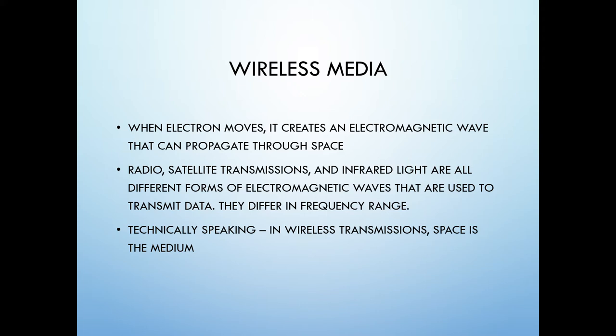Electromagnetic waves include radio waves, microwaves, infrared, visible light, ultraviolet, X-rays, and gamma rays, which collectively form the electromagnetic spectrum. All these waves share the same basic properties but differ in frequencies.